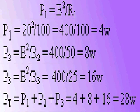Continuing, P2 is equal to E squared divided by R2, which is equal to 400 divided by 50, or 8 watts. And P3 is equal to E squared divided by R3, which equals 400 divided by 25, or 16 watts. The total power, therefore, is equal to P1 plus P2 plus P3, or 4 plus 8 plus 16, which equals 28 watts.